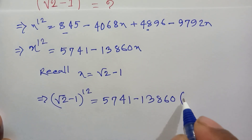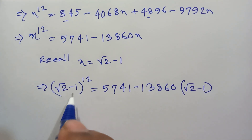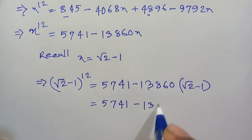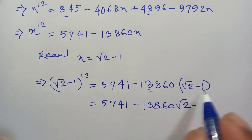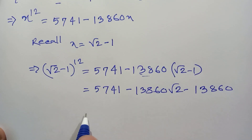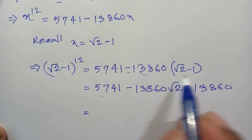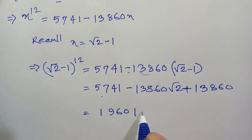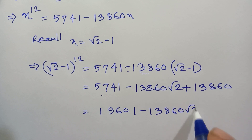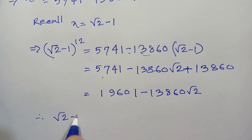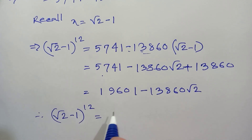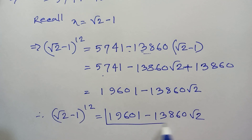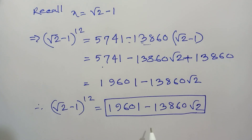So (√2 - 1)¹² = 5741 - 13860(√2 - 1) = 5741 - 13860√2 + 13860. Therefore (√2 - 1)¹² = 19601 - 13860√2. This is the value of the math problem. Thanks for watching — please subscribe to my channel for more videos, bye bye.